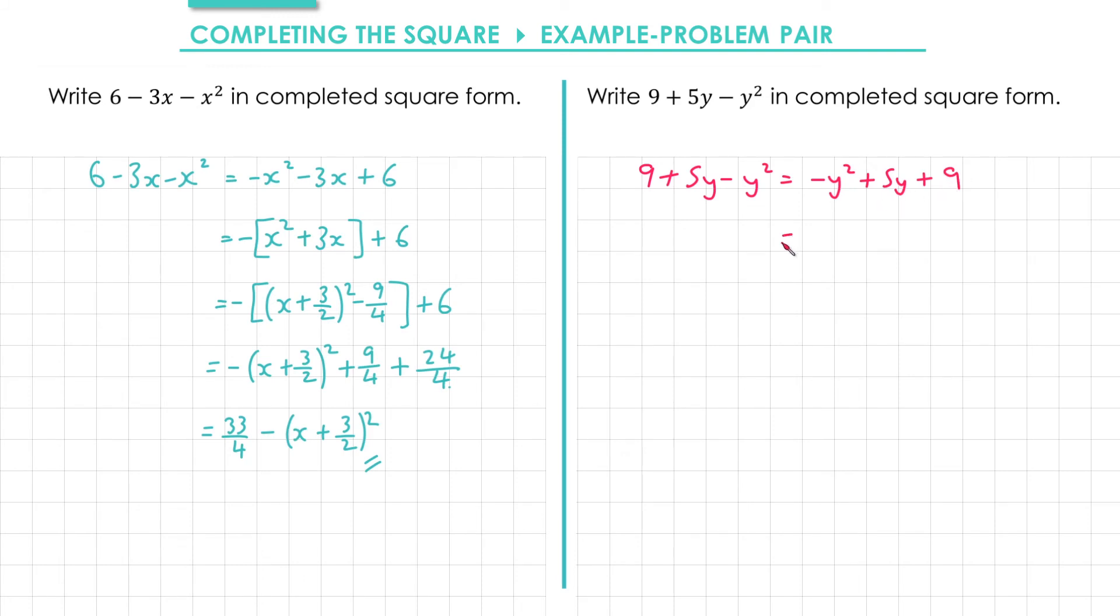Next I'll factorise a minus 1 outside of the square brackets, only from the first two terms though. That gives me y squared minus 5y.